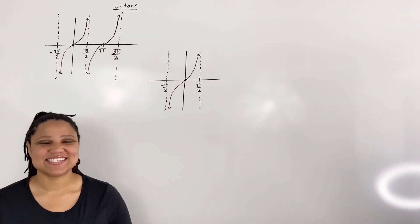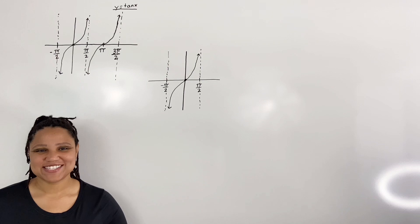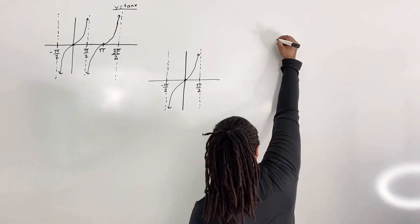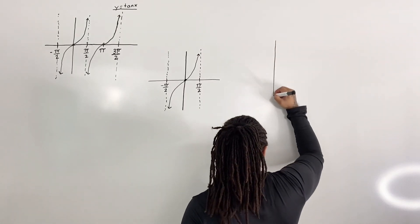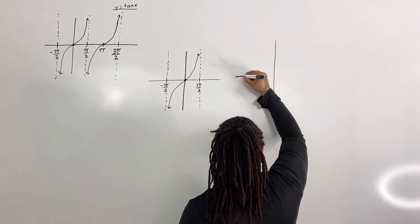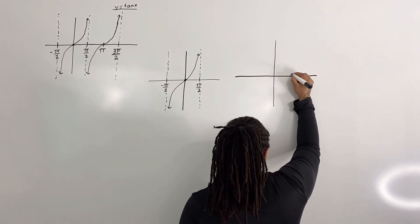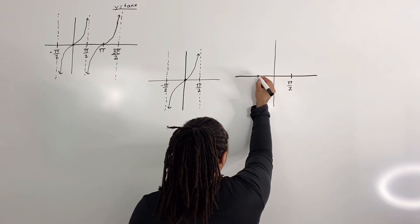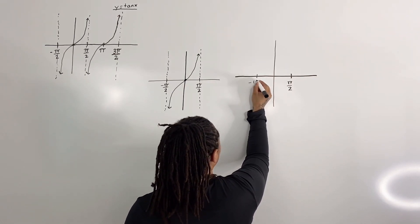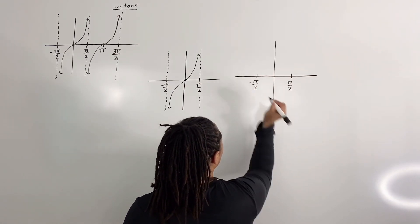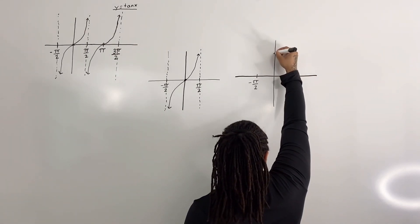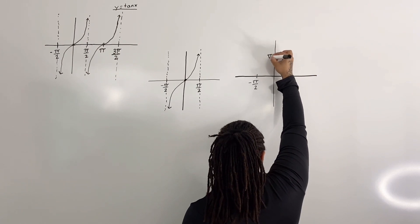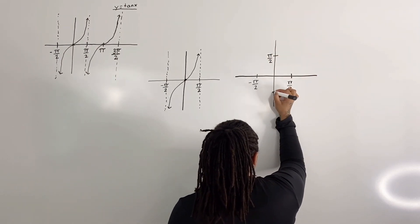Now here are the steps for graphing inverse tangent. Step one: draw a number quadrant. I'm going to draw our number quadrant. We have pi over two and negative pi over two on both axes.